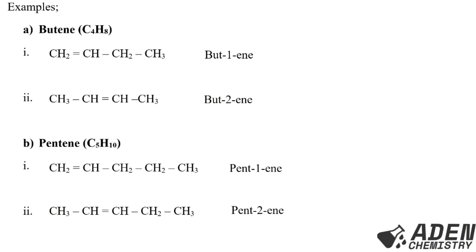For pentene, the first isomer has the double bond on the first carbon — named pent-1-ene. The second isomer has the double bond on the second carbon — named pent-2-ene. If we check the carbon and hydrogen atoms in both structures, they have the same molecular formula C5H10 but different structural formulas. So just like butene, pentene has only two positional isomers: pent-1-ene and pent-2-ene. Trying to put the double bond on the third carbon gives pent-2-ene again when counted from the other side.